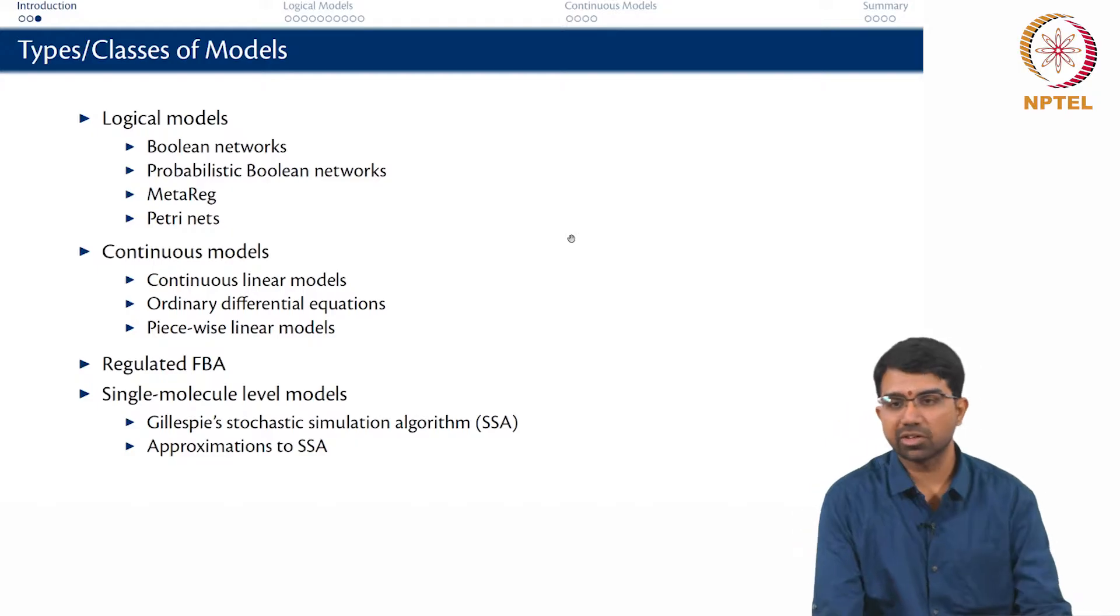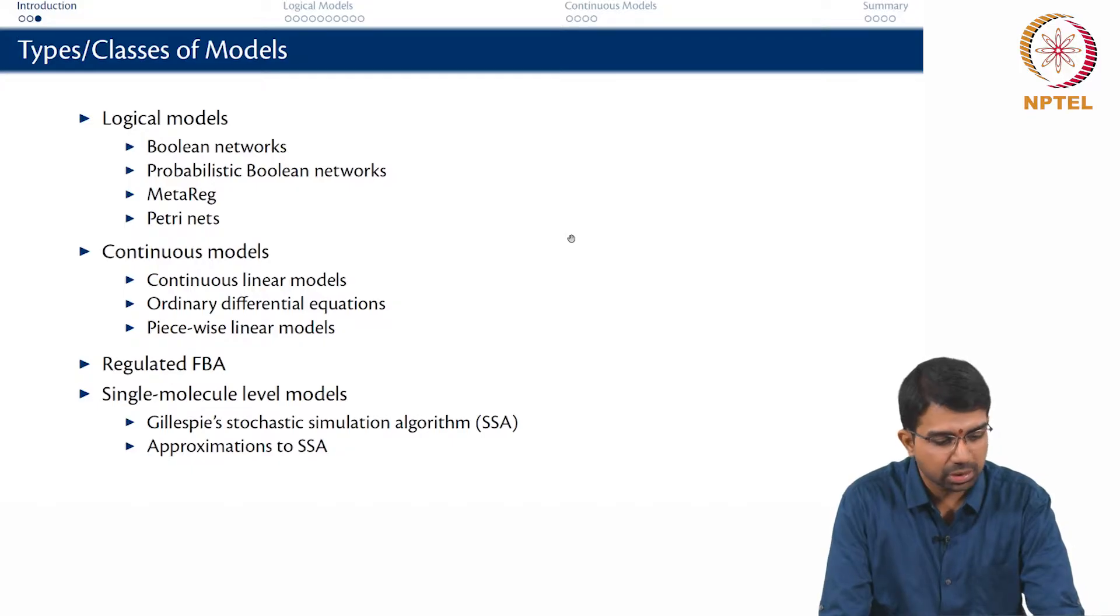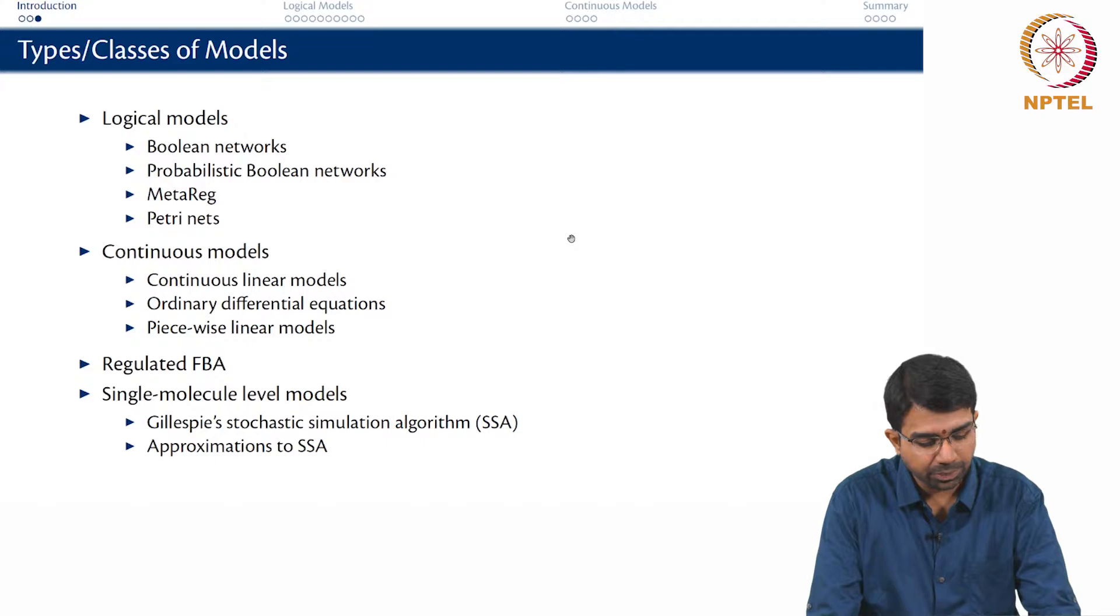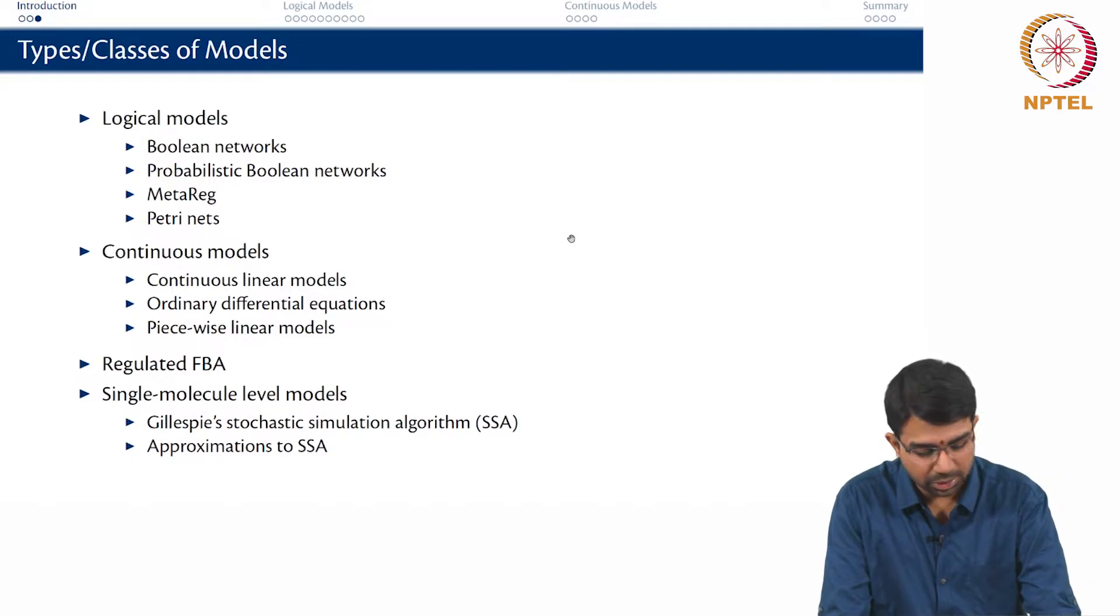So there are many different classes of models that can be used. The most useful paradigm is that of logical modelling where there are Boolean networks, probabilistic Boolean networks and tools such as MetaReg and there are also Petri nets. Continuous models include continuous linear models, ordinary differential equations, piecewise linear models. Regulatory flux balance analysis is something we have done in a previous class and you can also have stochastic algorithms. There is Gillespie stochastic simulation algorithm which is very popular and there are approximations to Gillespie's algorithm.